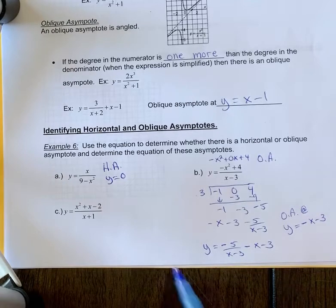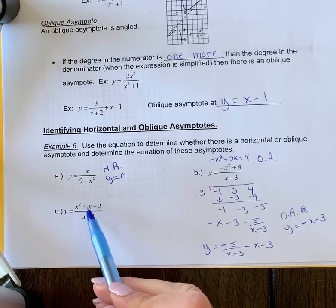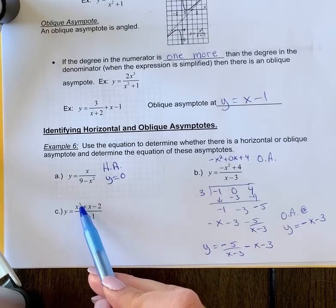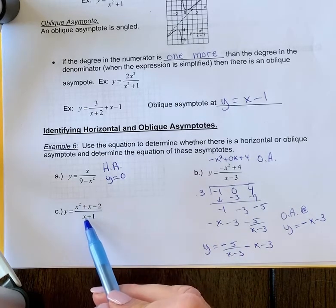In example 6c, to determine what kind of asymptote we have, we compare degrees. The degree in the numerator is one more than the degree in the denominator, so it has an oblique asymptote.